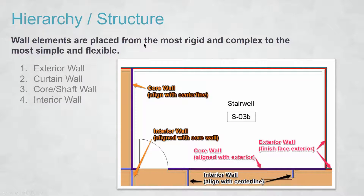Finally, hierarchy or structure: I use a structure that starts with exterior walls and curtain walls, then works its way to cores, shafts, and interior walls. Exterior walls define the finished face — interior or exterior — and the core walls and interior walls depend on that position. As long as you have this dependency, you know things are lining up above, below, and all around. Core walls shown in dark purple may go two or three floors down, while the red and green walls go even higher — keeping this structure ensures everything gels together.